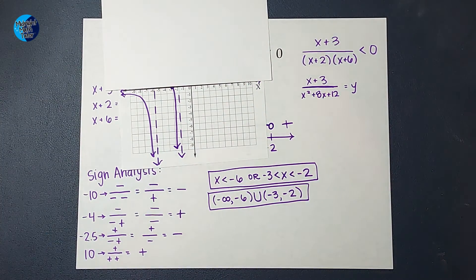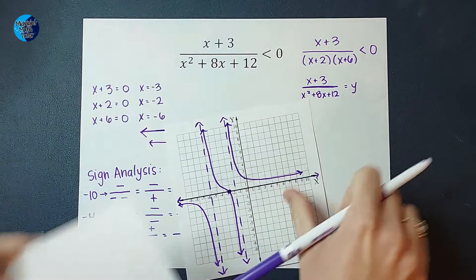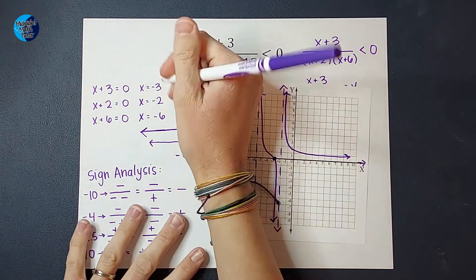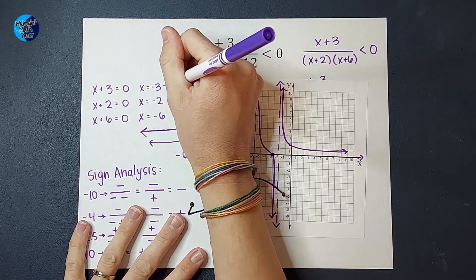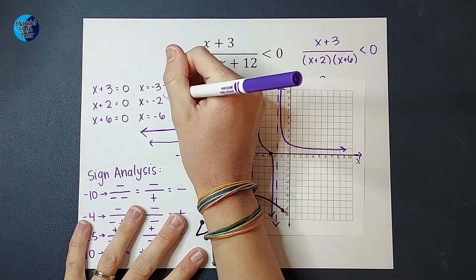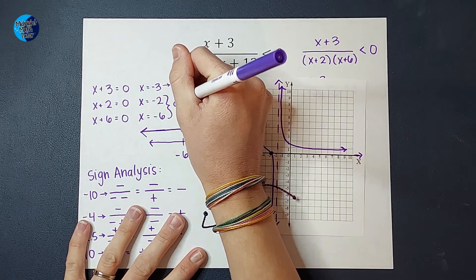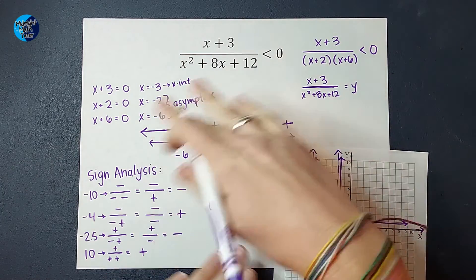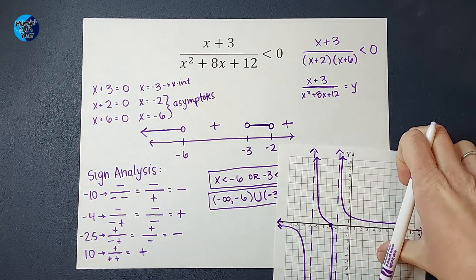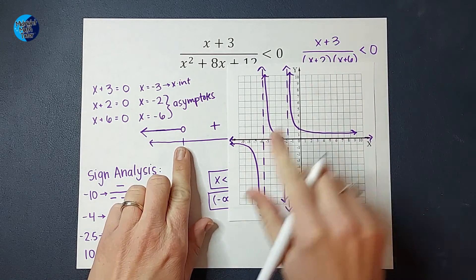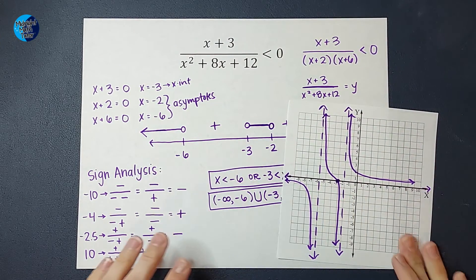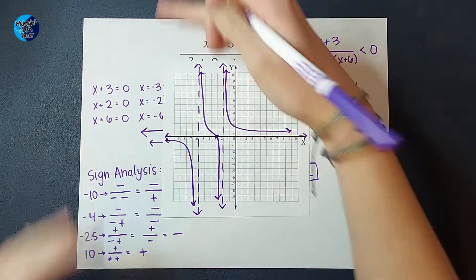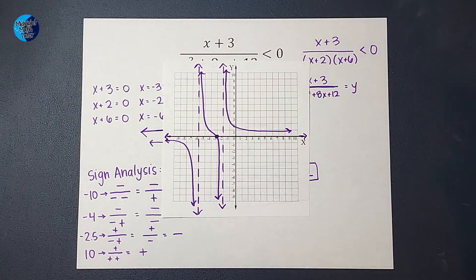But guys, do you see how this worked? When we set each of these equal to 0, we were actually finding this one was our x-intercept. And these ones were our asymptotes. That's why we set those equal to 0. And then this whole sign analysis business was just figuring out from each of those spots, the negative 6, the negative 3, the negative 2, which way, which direction the graph was going. Okay. So that's why we set them equal to 0. That's why we did the sign analysis. And that's how we got our answer. And I think it's so cool.